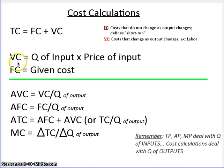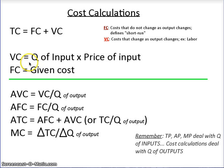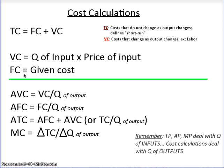To calculate variable costs — and you will not always be asked to calculate them. Sometimes the data and numbers are given to you directly. However, occasionally you'll be given a quantity of input, for example a number of workers, and then the price of that input, such as the wage rate. So if you take quantity of workers times price of input, you get variable cost. Fixed costs will always be given — they tell you up front what they are.